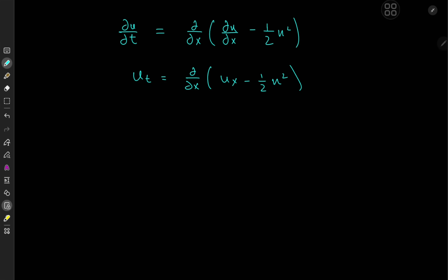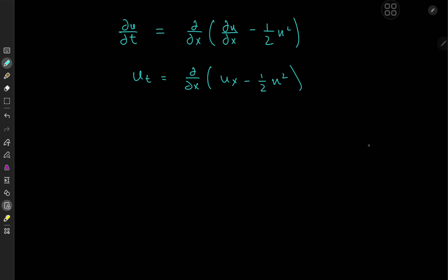With this nonlinear term, if we introduce a transformation expressing u in terms of some other function such that differentiating it yields a square, that may be helpful. What kind of function differentiates to a square? A quotient-rule type structure — since the derivative of f/g is (g·f′ − f·g′)/g² — might help. So although this looks like a rabbit-out-of-the-hat trick, there is cool intuitive reasoning behind it. We transform u by writing it as the derivative with respect to x of the logarithm of v, where v is a function of x and t.